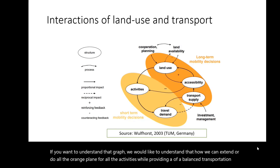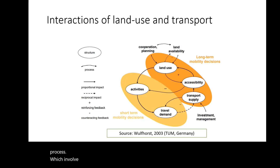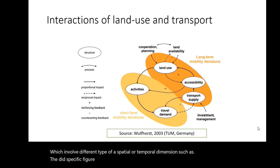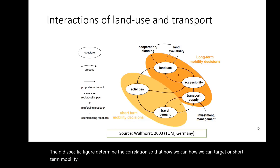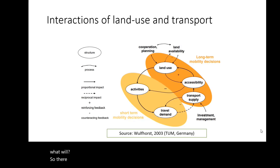Land use and transportation interaction is quite a dynamic process which involves different spatial and temporal dimensions. The graph determines the correlation of how we can target short-term mobility decisions for the purpose of achieving long-term goals. Transportation supply is designed for a specific number of people, so if demand increases, it will have an effect on the supply.